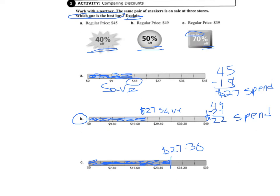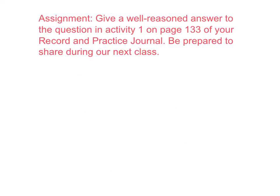So your job for homework is to go back up to the top here and to try your best to answer which one is the best buy and explain your answer. Your assignment for this lesson is to give a well-reasoned answer to the question in Activity 1 on page 133 of your record and practice journal. You should be thinking about things like, how much should the discount be for Store C to have the best deal? Be prepared to share during our next class.